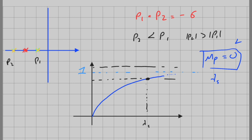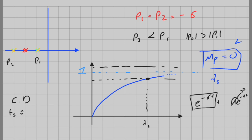How do we compute settling time? For the critically damped case, since we have two components — one like e to the power minus sigma·t, and another constant times t·e to the power minus sigma·t — we concentrate on the exponential part. The settling time is approximately equal to 4 divided by sigma for 2%, and 3 divided by sigma for 5%. We use the exact same formula that we use for overdamped systems.